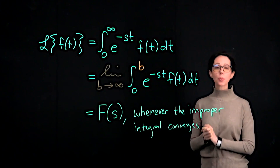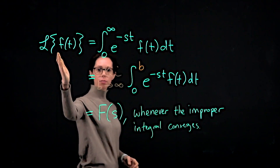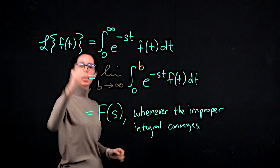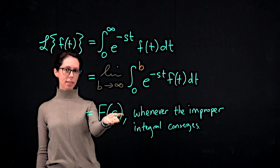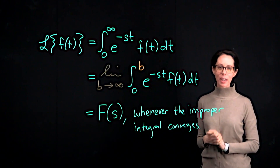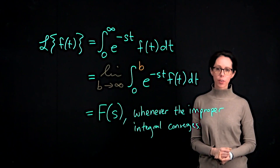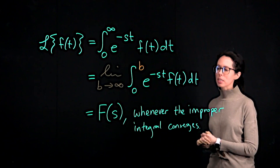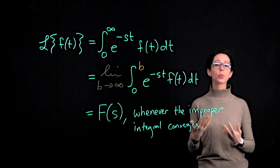That's what the Laplace transform is: it transforms us from a starting function of little t — typically thought of as time — into a new function of a new variable s. For the first few examples, I would like to focus on how to evaluate this improper integral. Let's start with the example f of t equals one.